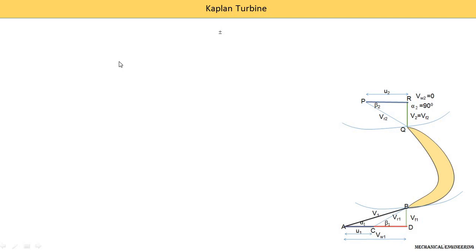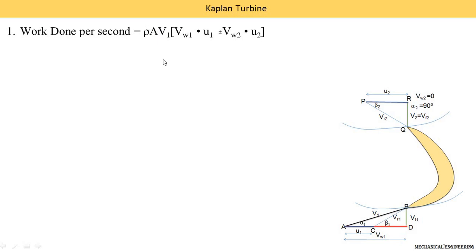Now we write the equation for work done. Work done per second for a Kaplan turbine is: rho × A × V1 × (Vw1 × u1 + or − Vw2 × u2). This equation is derived from the impact of a jet during a series of calculations. For understanding turbines and pumps, it is most important that you clearly know the impact of a jet — then it becomes easy to understand all derivations for turbines and pumps.